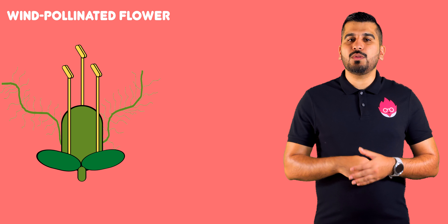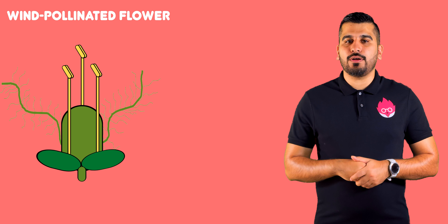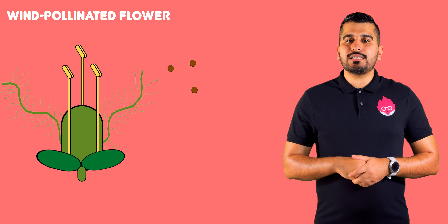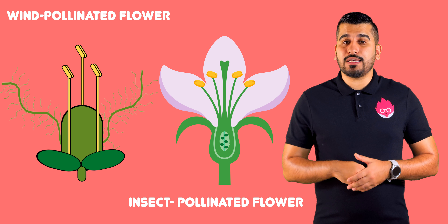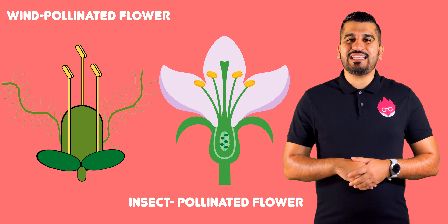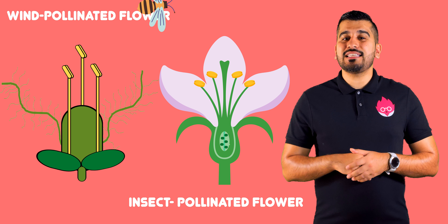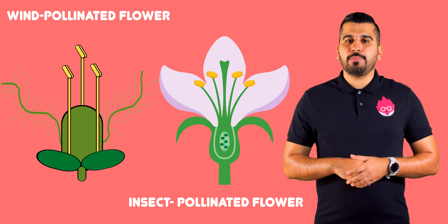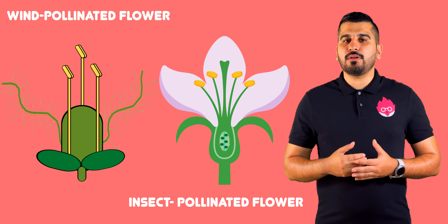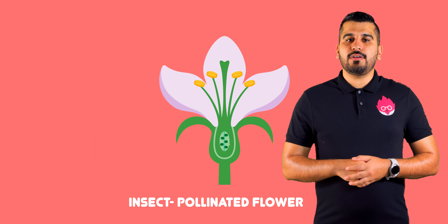This plant is called a wind pollinated flower and it uses wind to pollinate. The first flower we looked at is called an insect pollinated flower because it uses insects to pollinate. Because of how these plants are pollinated, they have different features.